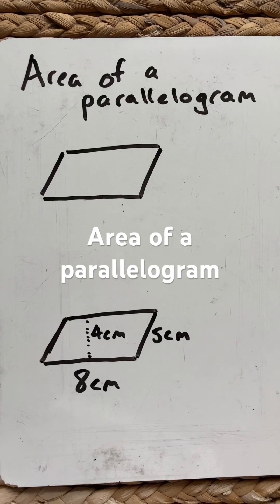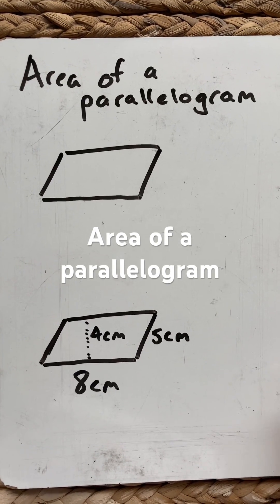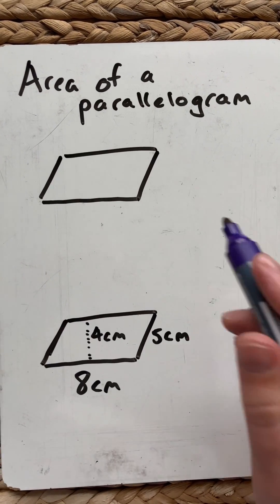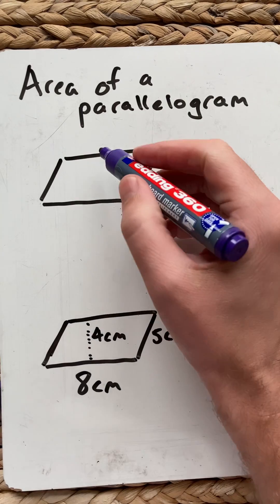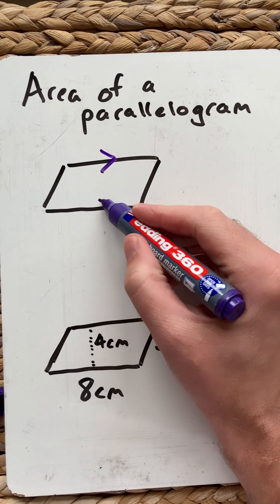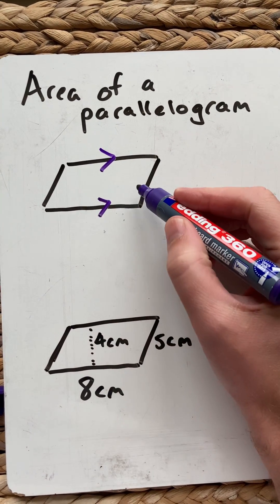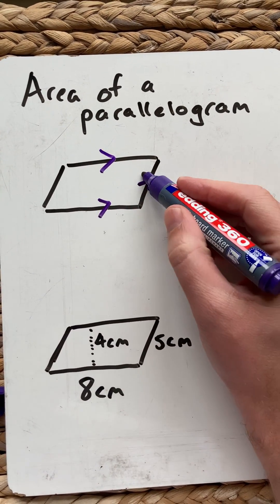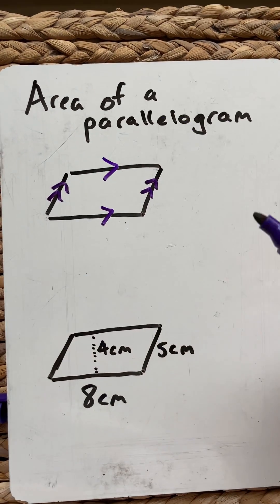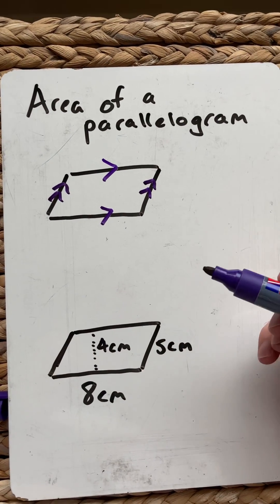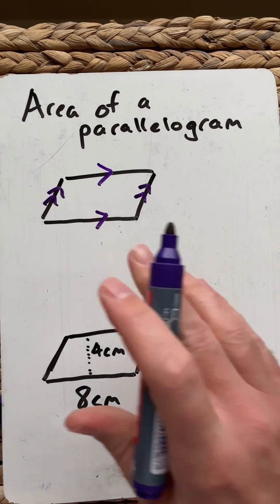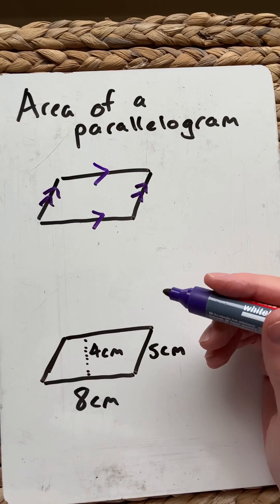Hello and welcome to Martin Maths. In this short, we're going to look at the area of a parallelogram. Here we have a parallelogram where these two sides are parallel, and those two sides are parallel, and there are no right angles. So it's similar to a rectangle, but it's sort of been shifted to the side.